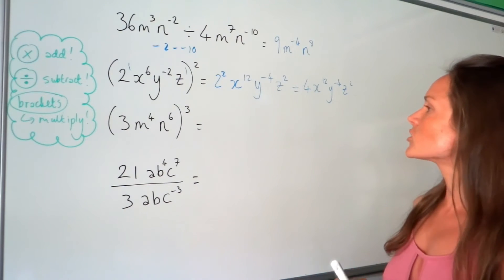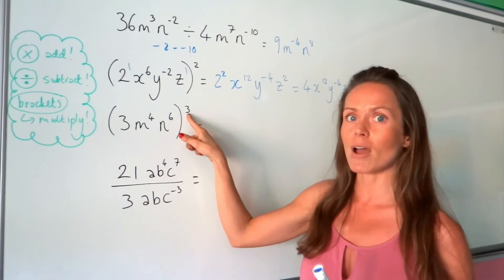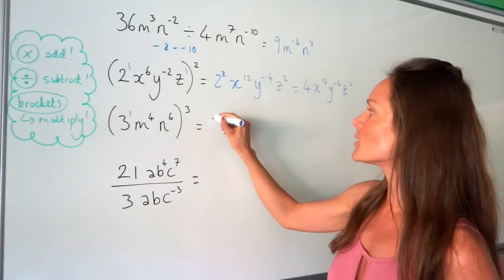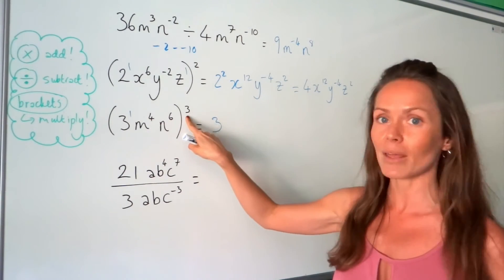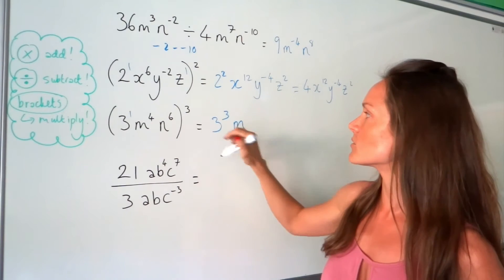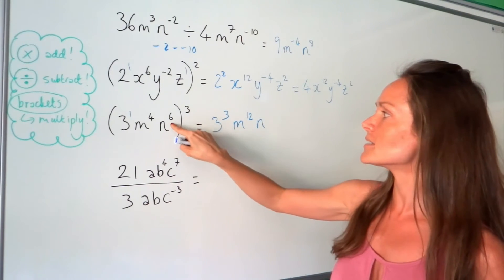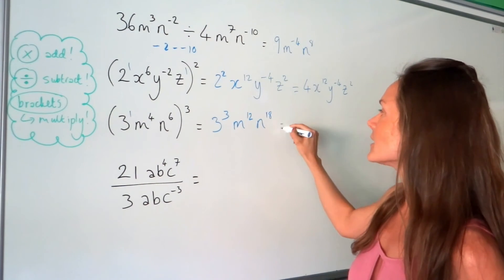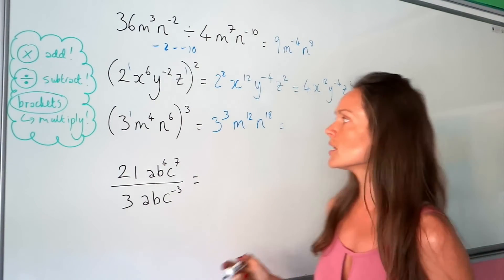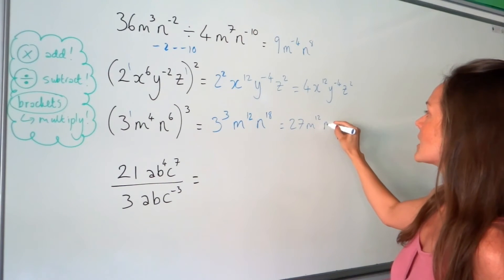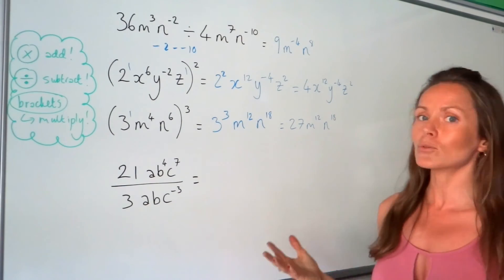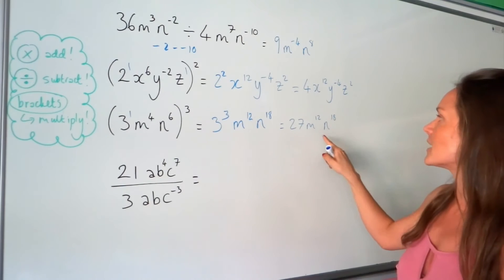Just like the previous example, this power affects everything inside the brackets, including the number three at the beginning. Multiply all the powers by three: one times three is three, four times three is twelve for n, and six times three is eighteen for the next n. Then evaluate: three cubed is three times three times three which is 27. Remember you can't combine different letters, so the power rules don't apply there.